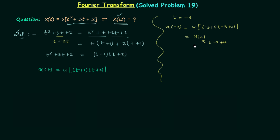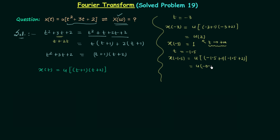So x(-3) equals +1 because the unit step signal equals 1 for positive values of time t. Now when t=-1.5, x(-1.5) = u(-1.5+1) × (-1.5+2), which gives u(-0.25). Since t is negative here, the unit step signal equals 0, so x(-1.5) equals 0. Similarly, when t=1.5, x(1.5) equals +1.